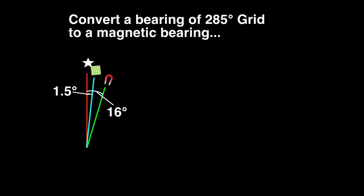Problem 1. Convert a bearing of 285 degrees grid to a magnetic bearing. Remember when you're working with the declination diagram, bearings increase in a clockwise direction. Magnetic north is 16 degrees east of true north. Grid north is 1.5 degrees east of true north.